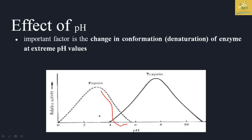Importantly, the optimal pH of pepsin is much lower than that of trypsin — pepsin shows high activity at very low pH while trypsin is optimally active at a higher pH. This is an important distinction worth noting.